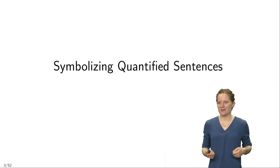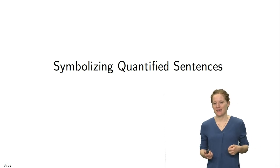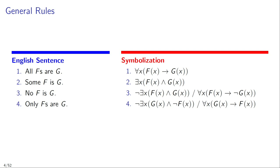Let's talk about symbolizing quantified sentences in FOL. Most English sentences that you are going to be asked to symbolize in this class have one of the following four forms: they could be of the form 'all Fs are G,' 'some F is G,' 'no F is G,' or 'only Fs are G.'